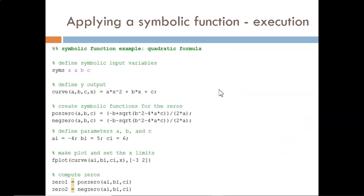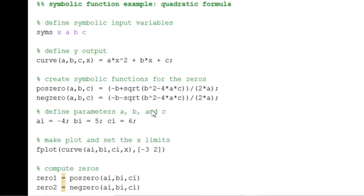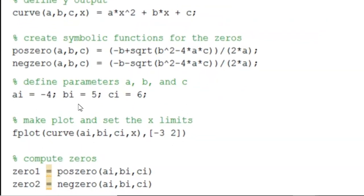Here is a complete script that does this. The top half is the setup we just explored. Then, I define specific numeric values for a, b, and c. I am careful to use different variable names so as to not overwrite the symbolic variables a, b, and c.